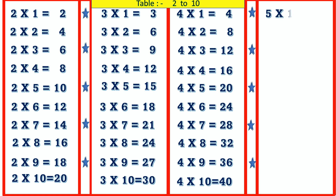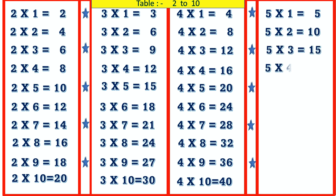5 1's are 5, 5 2's are 10, 5 3's are 15, 5 4's are 20, 5 5's are 25, 5 6's are 30.